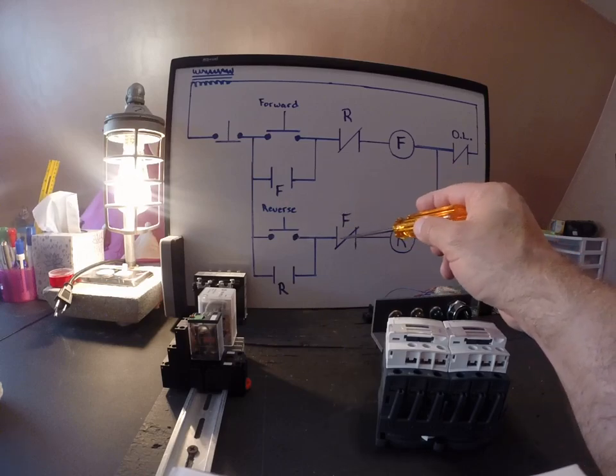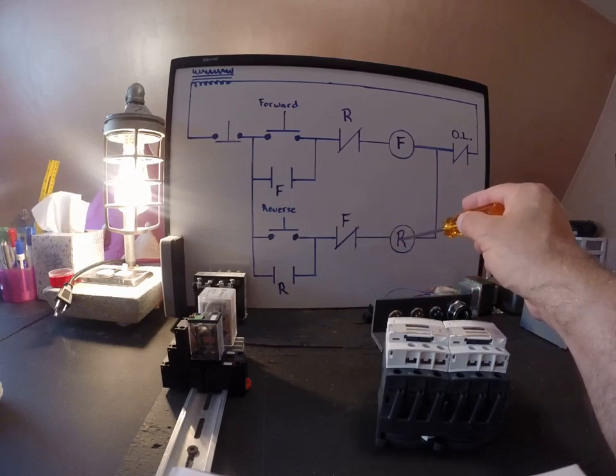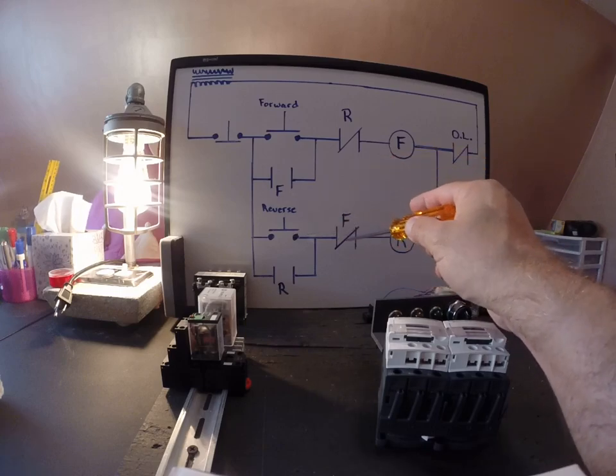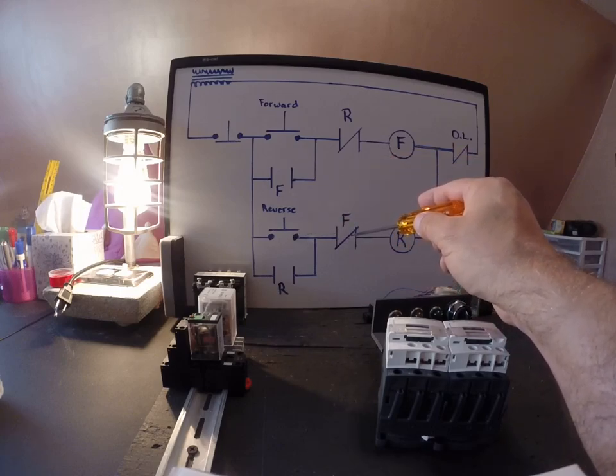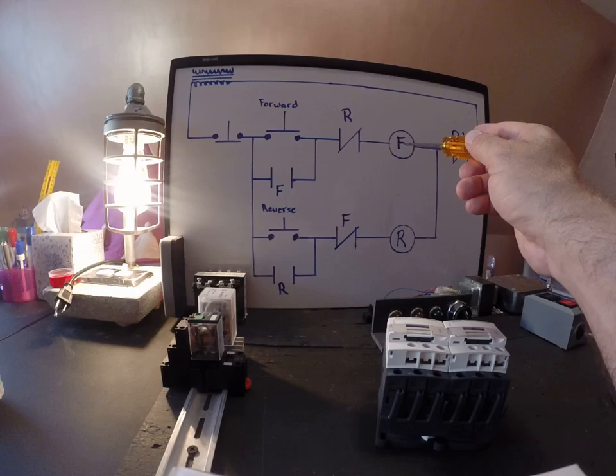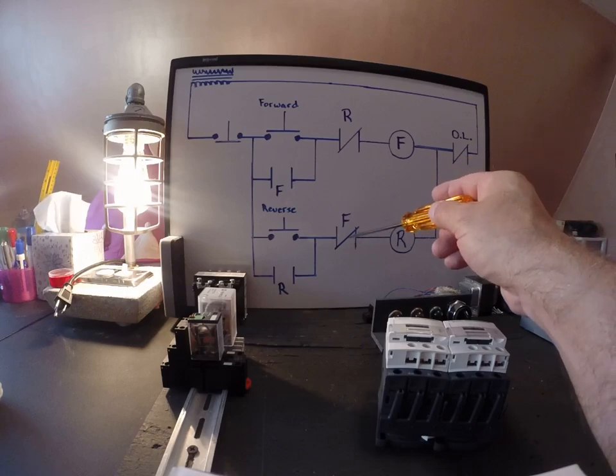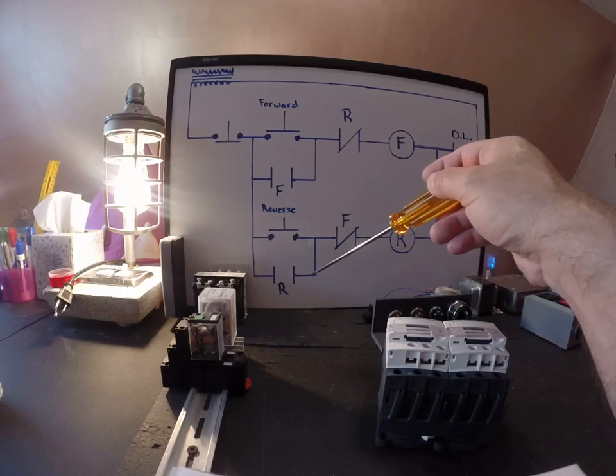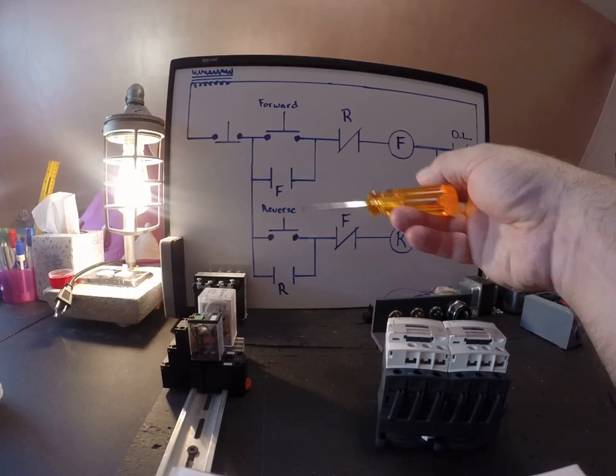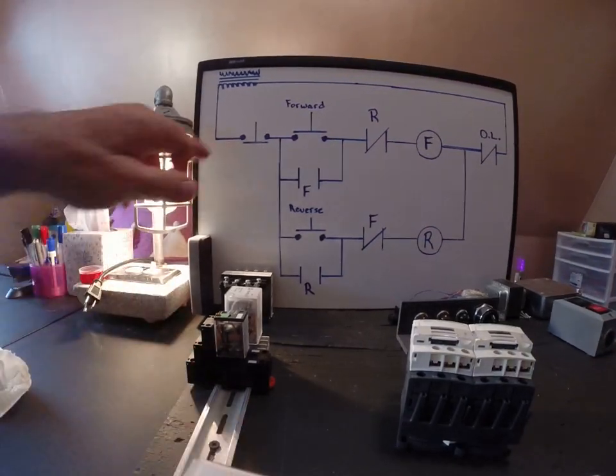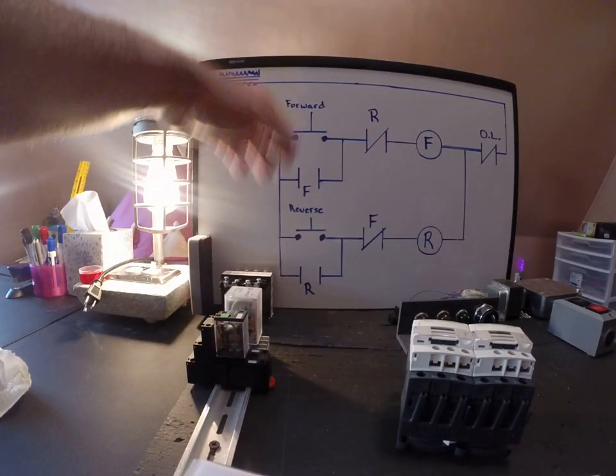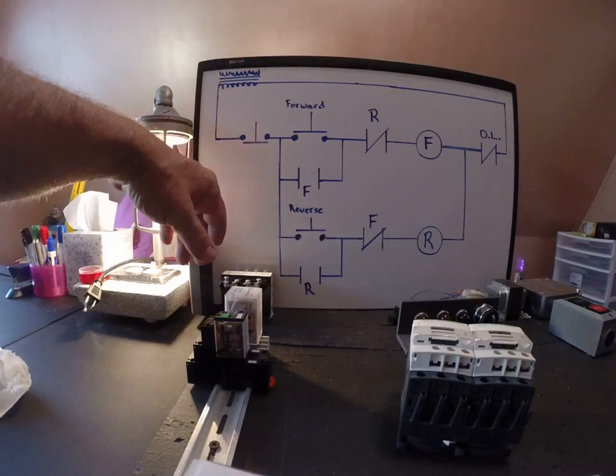So, while this closed and this one opens, it takes away the path for current flow to the reverse button. So, if I hit the reverse, this is actually an open circuit because the forward button's already energized, the F-coil, and that contact is closed, which means this one's open. If I hit reverse, it won't work. It'll only work when I hit the stop button and take power away from the F-coil and de-energize the circuit.